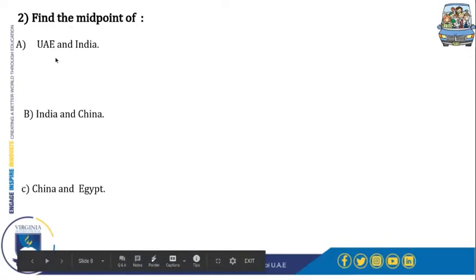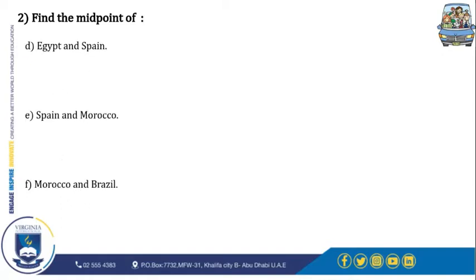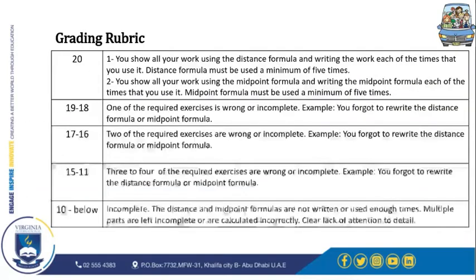The third task is to find the midpoint between each pair of countries: UAE and India, India and China, China and Egypt, and so on — just like the last task. Write the coordinates of both countries, then write down the midpoint formula and solve it using the midpoint formula. Do that for every country pair.